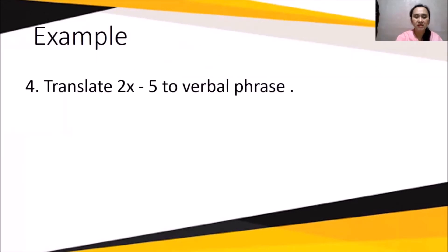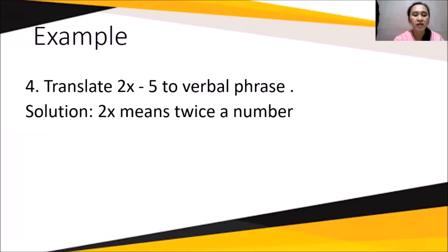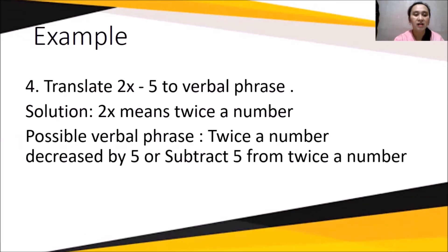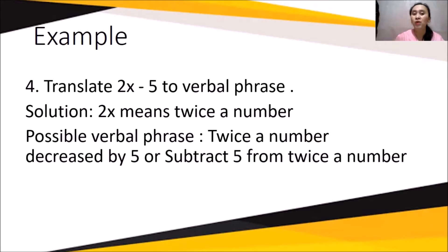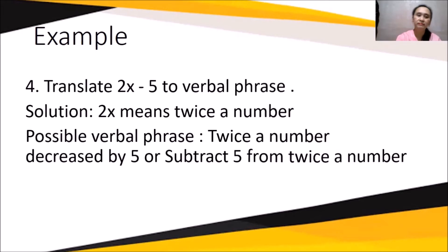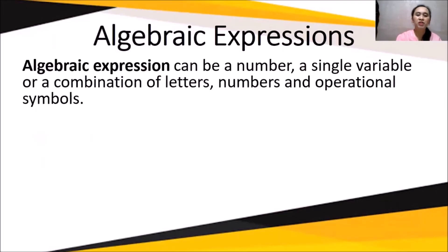Now, the given is the mathematical symbol and we translate it to a verbal phrase. To translate 2x - 5: '2x' means twice a number, so the possible verbal phrase is 'twice a number decreased by 5,' or 'subtract 5 from twice a number.' Both are valid verbal phrases for 2x - 5.